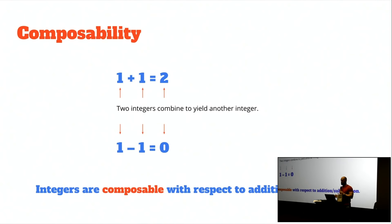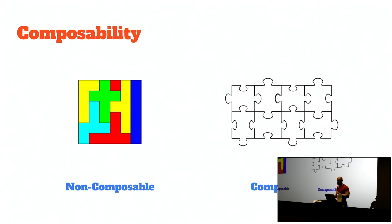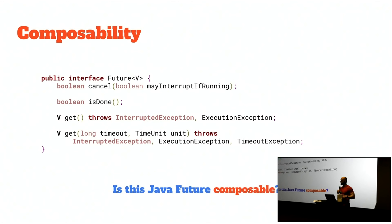Composable solutions allow us to snap together solutions using building blocks. A non-composable API — like this Future interface — gives you no way to take two futures and combine them together to get another future. This is a dead-end API. You use what's here; you can't build futures from other futures using this API. This is a non-composable API.